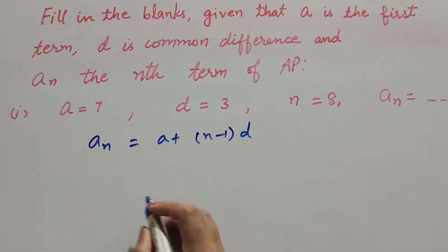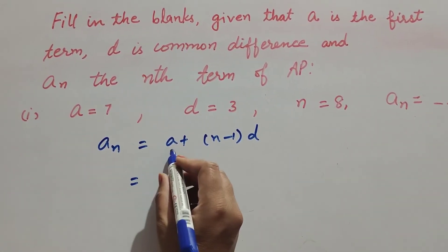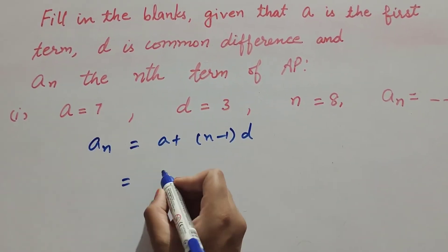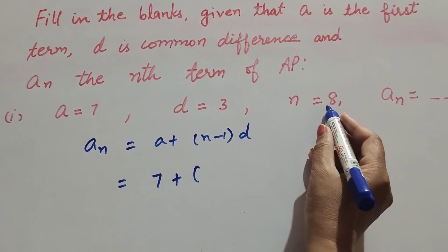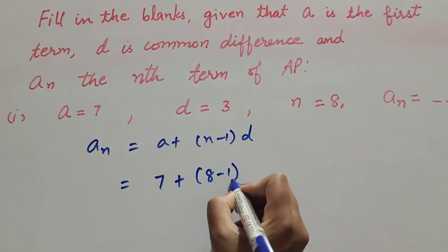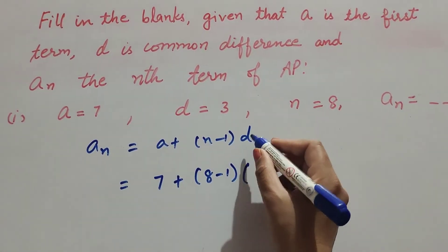So a_n that we have to find - a is first term, it is equal to 7 plus (n minus 1), n is equal to 8 minus 1, d is common difference it is 3.